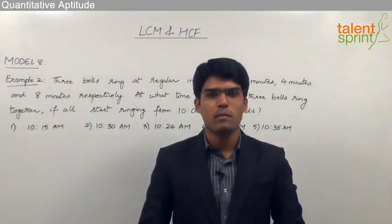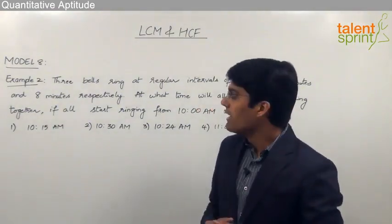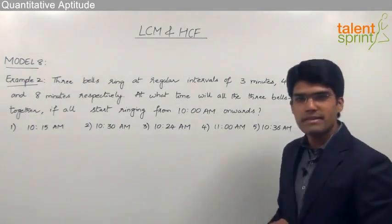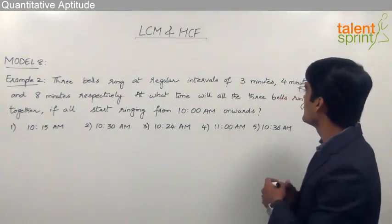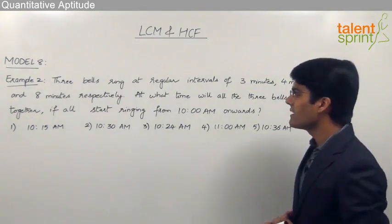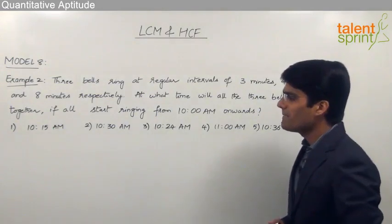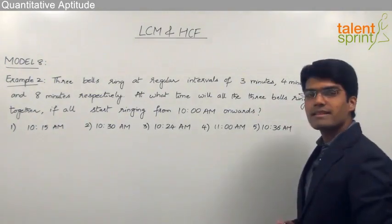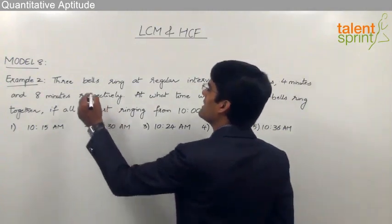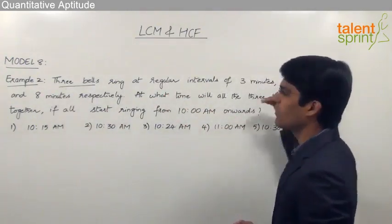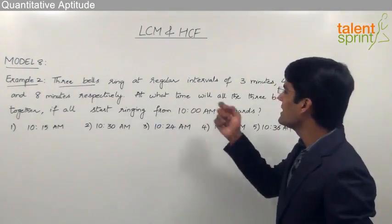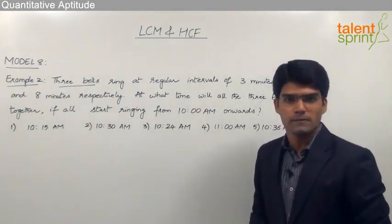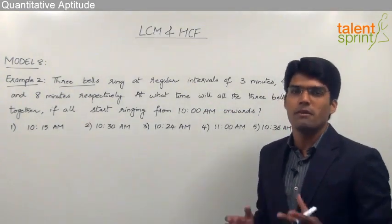Let us now take the second example. Three bells ring at regular intervals of 3 minutes, 4 minutes, and 8 minutes respectively. At what time will all 3 bells ring together if they all start ringing from 10 am onwards? The given options are 10:15 am, 10:30 am, 10:24 am, 11:00 am, and 10:36 am. We need to find the exact time when all three bells ring simultaneously.